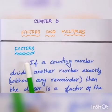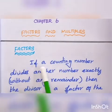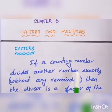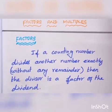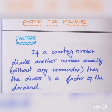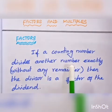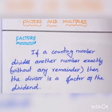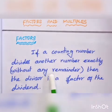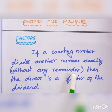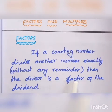Now, Factors and Multiples, Chapter 6. Definition of Factors: If a counting number divides another number exactly without any remainder, then the divisor is called a factor of the dividend. Counting numbers are 1, 2, 3 and so on. The divisor that divides exactly is called the factor of the dividend.